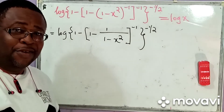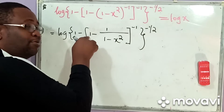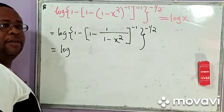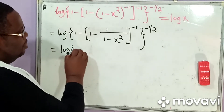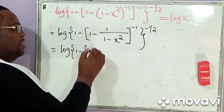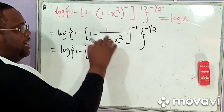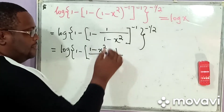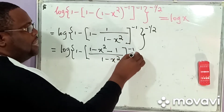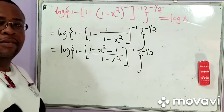What do we do next? We are going to take LCM. When we take LCM, this is going to multiply 1. So this becomes equal to the logarithm of 1 minus — if we take LCM here, we simply have 1 minus x squared minus this 1, now divided by 1 minus x squared — and every other thing remains the same, to the power 1 over 2.